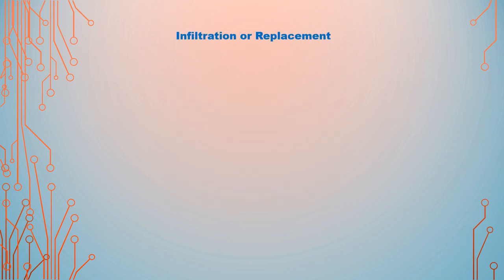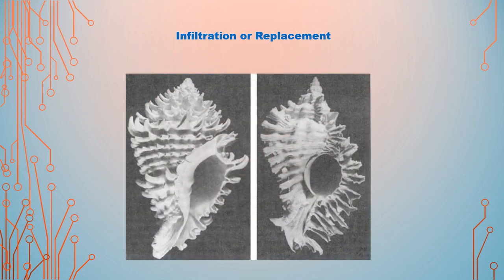Infiltration or replacement: the precipitation of minerals takes place, which later infiltrate the cell wall. The process is brought about by several elements such as silica, calcium carbonate, and magnesium carbonate. These minerals replace the original parts of the organism. The hard parts are dissolved and replaced by these minerals, so only the structure of the organism remains. That is infiltration or replacement.